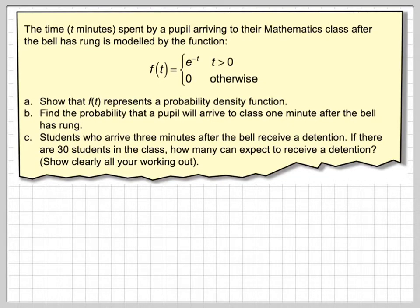In this video we're going to take a function and show that it can be used as a probability density function. The time t minutes spent by a pupil arriving to the mathematics class after the bell has rung is modeled by this function: f of t is e to the minus t, t greater than zero, and then it would be zero otherwise.